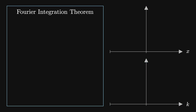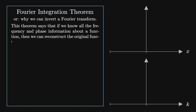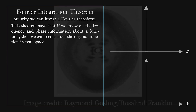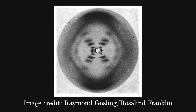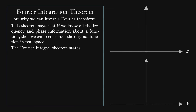Next we'll explore the Fourier integral theorem and learn why we can invert Fourier transforms. This theorem says that if we know all the frequency and phase information about a function, then we can reconstruct the original function in real space. This is the basis for fields like scattering and crystallography — in fact, this is the basis behind how Rosalind Franklin and Raymond Gosling were able to deduce the structure of DNA from their scattering experiments. We'll return to these ideas in the next video.